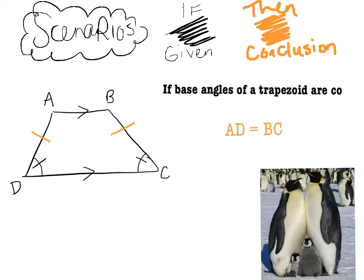If the base angles of a trapezoid are congruent then AD is congruent to BC. And we do need to kind of fix that a little bit. So that's segment AD is congruent to BC.